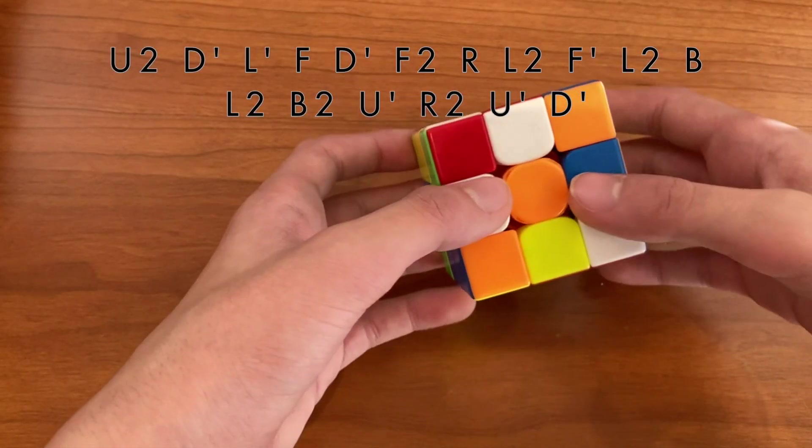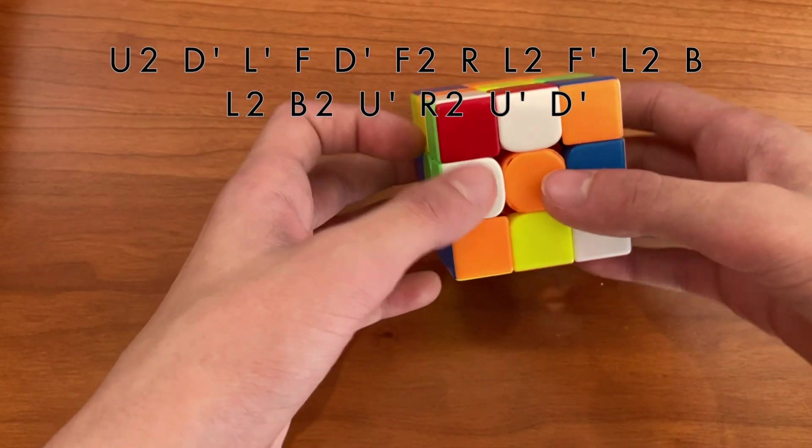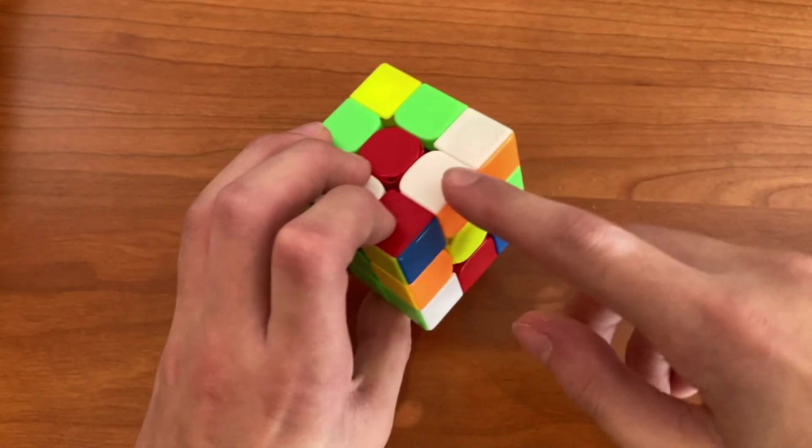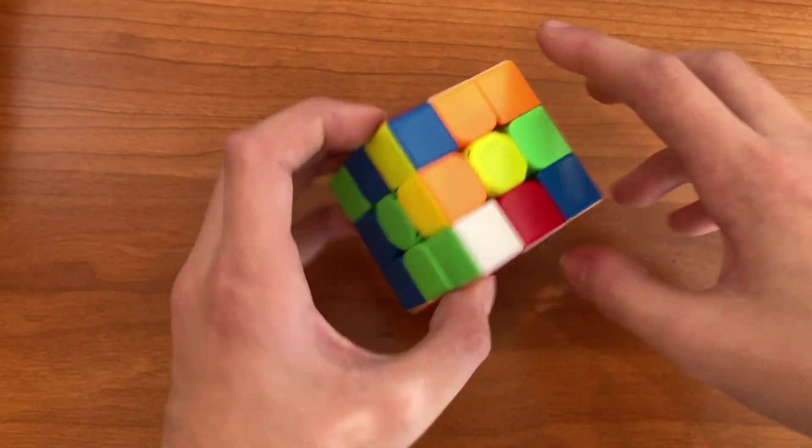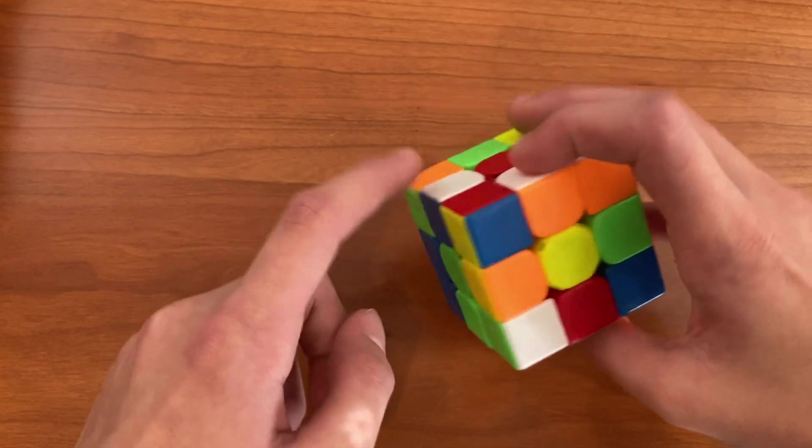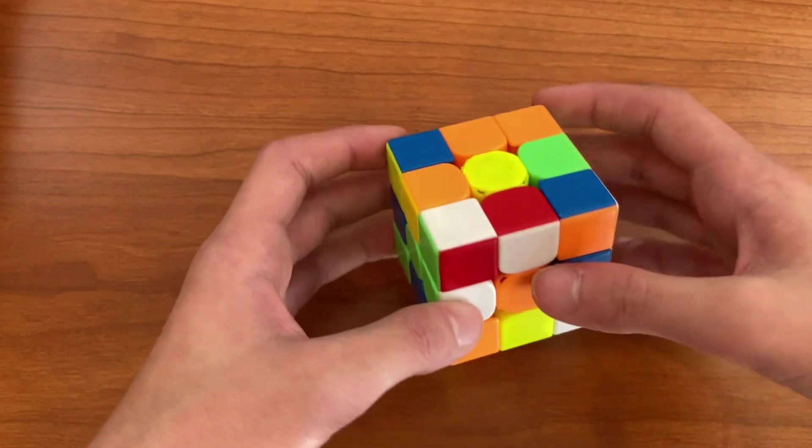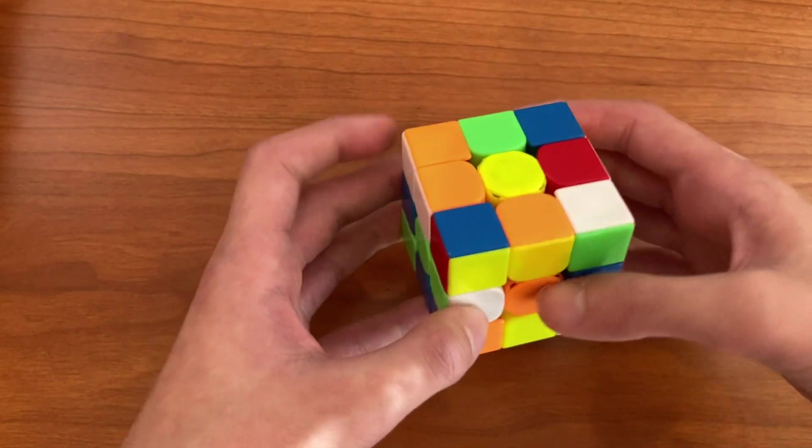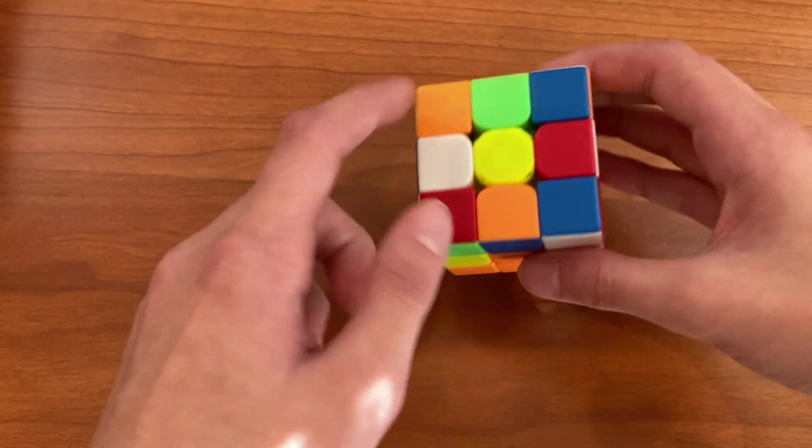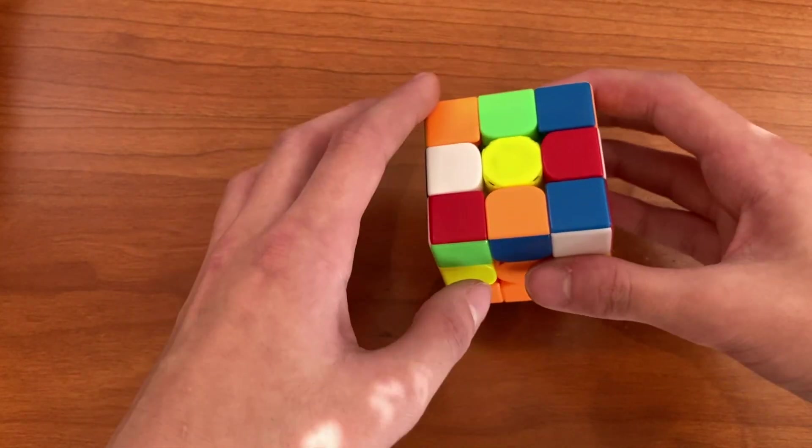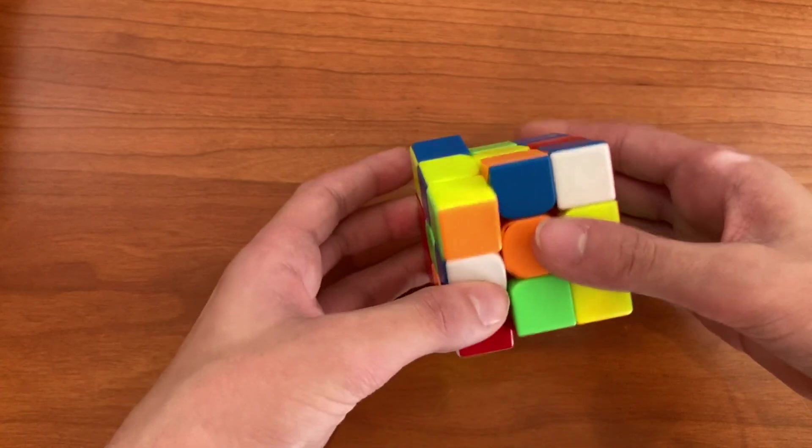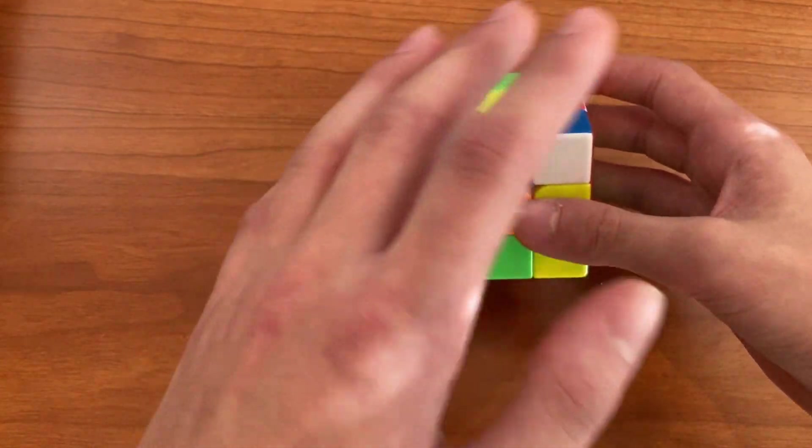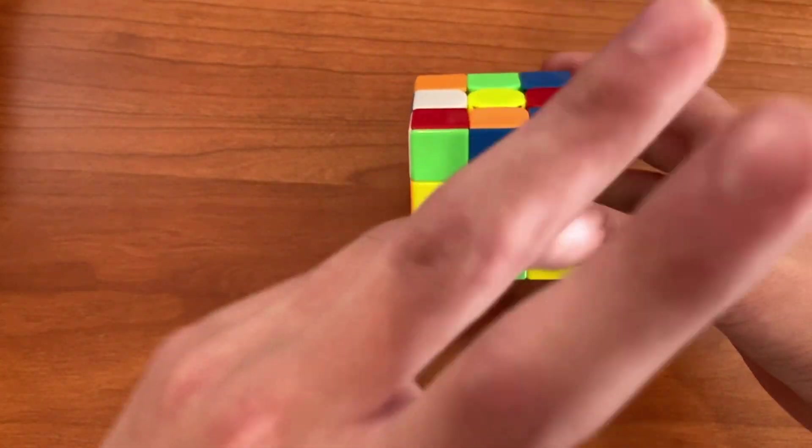So this first solve was a 6.09. Although this was his worst solve, there's so much you can learn from this. As you can see, we have this block here on white, and the edges are here, here, here, and here. So here, Timon went for white cross, and he started out by putting in these two pieces like this. Now what most people would do to make the X-cross is to bring this edge over and put in these two pieces like this. But Timon planned a lot more in this solve, he actually went for a double X-cross.